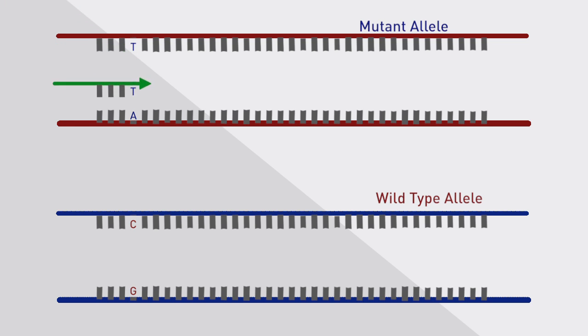A locus-specific primer is designed to be specific to the target gene. This will bind to mutant and wild-type allele-containing DNA.